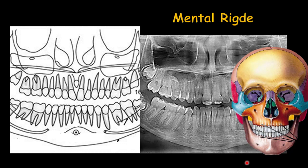The mental ridge is a bony protuberance in the skull that can sometimes be detected in the panoramic radiograph, as you can see in the schematic view.